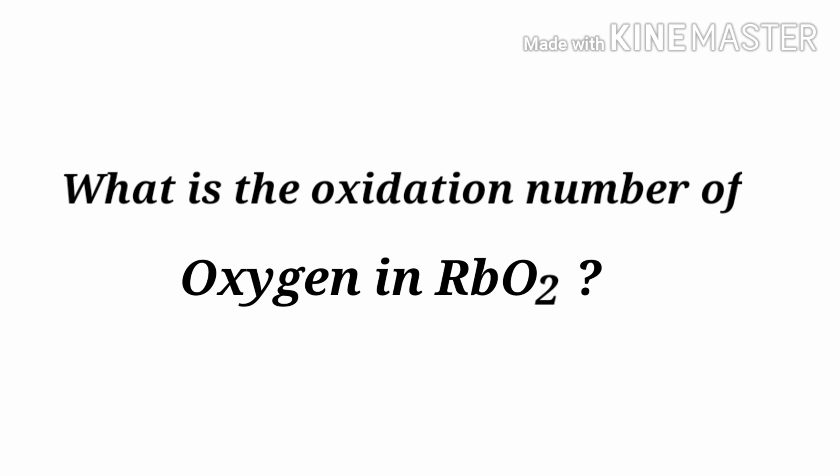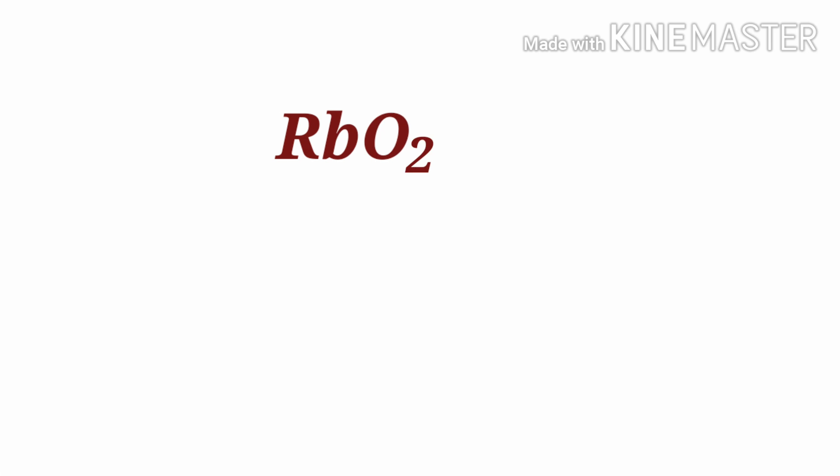What is the oxidation number of oxygen in rubidium superoxide? We can use the oxidation number rules to determine oxidation numbers. Rubidium superoxide is an inorganic compound with an overall oxidation number of 0; therefore, the sum of the oxidation numbers of the atoms is equal to 0.